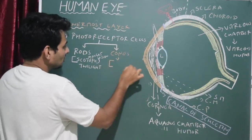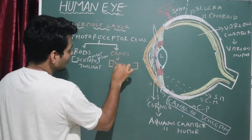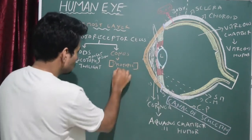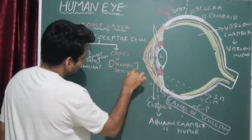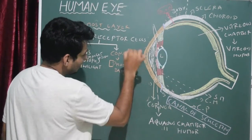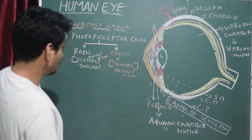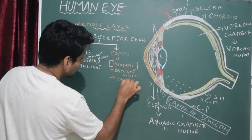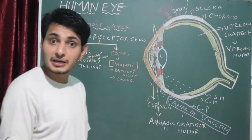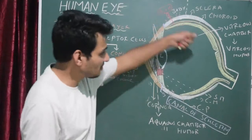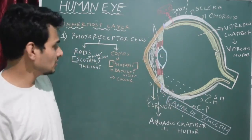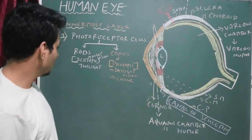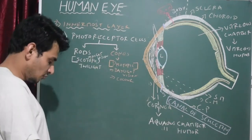Rods help in scotopic vision — twilight or night-time vision — helping to see objects in the dark. Cones help in photopic vision — daylight vision. There are three different types of cone cells: red, green, and blue cone cells. The second type of cell in the retina — next to the photoreceptor cells — are bipolar neurons. The third type is ganglion cells, located in the innermost layer.